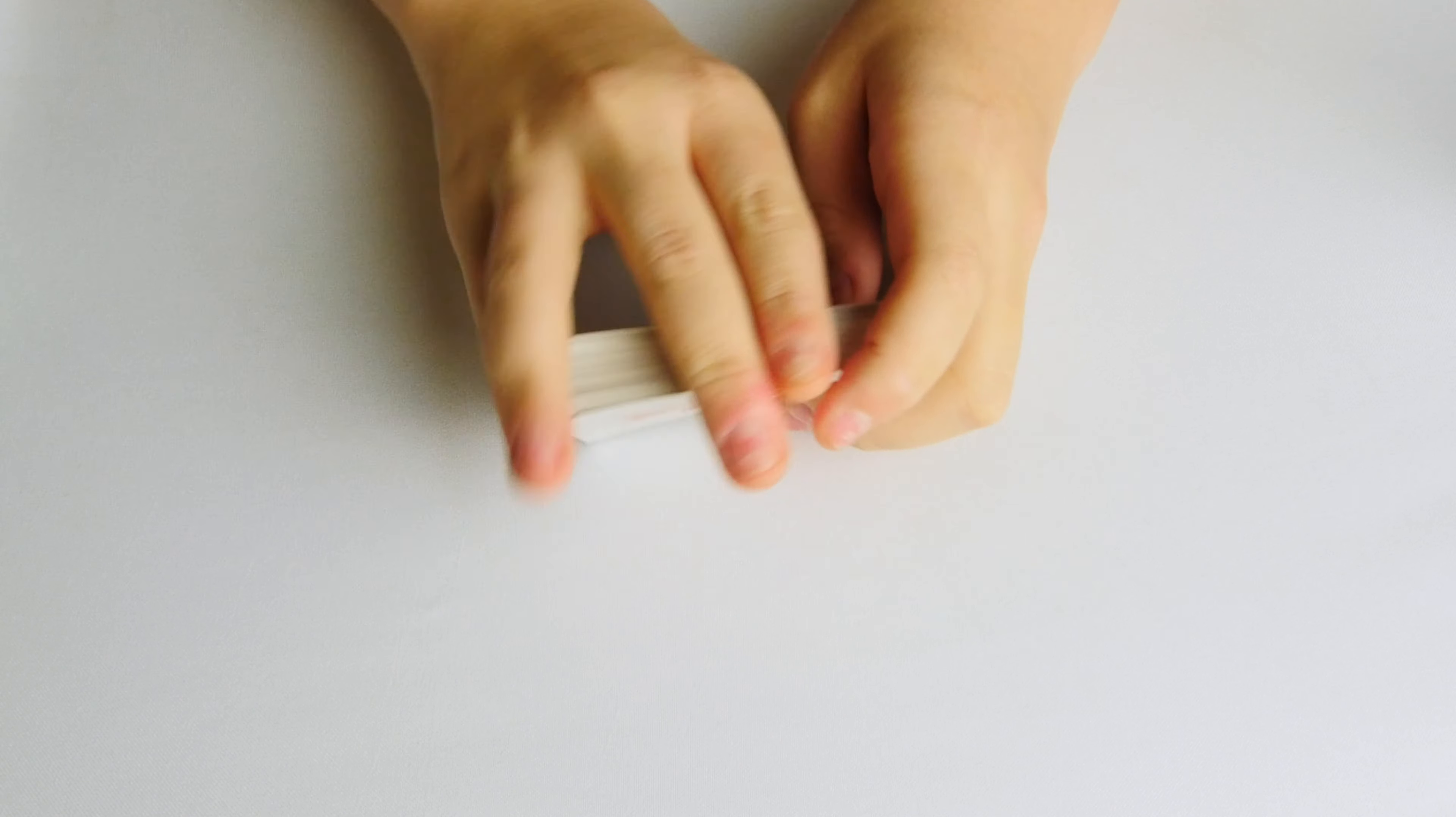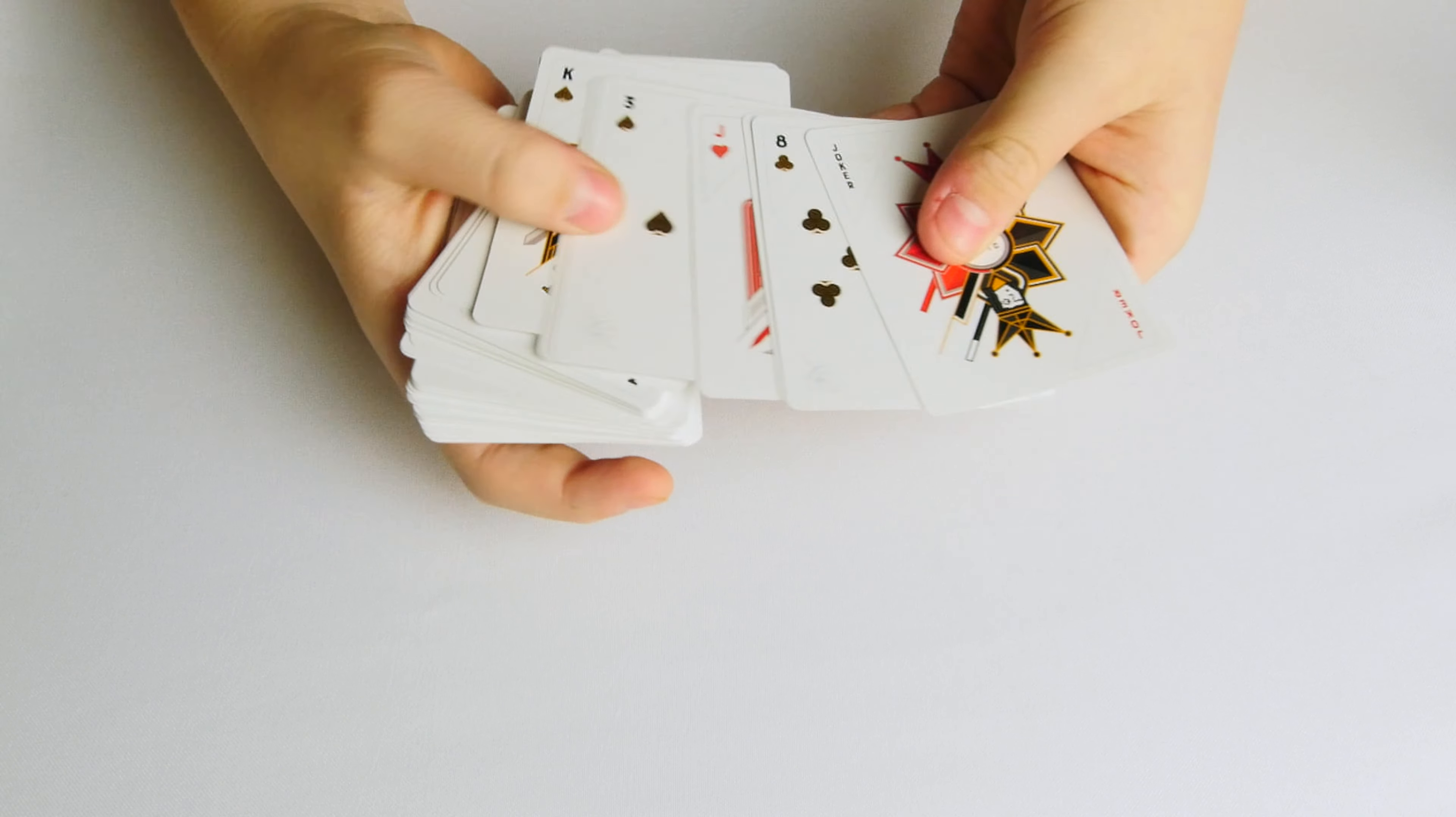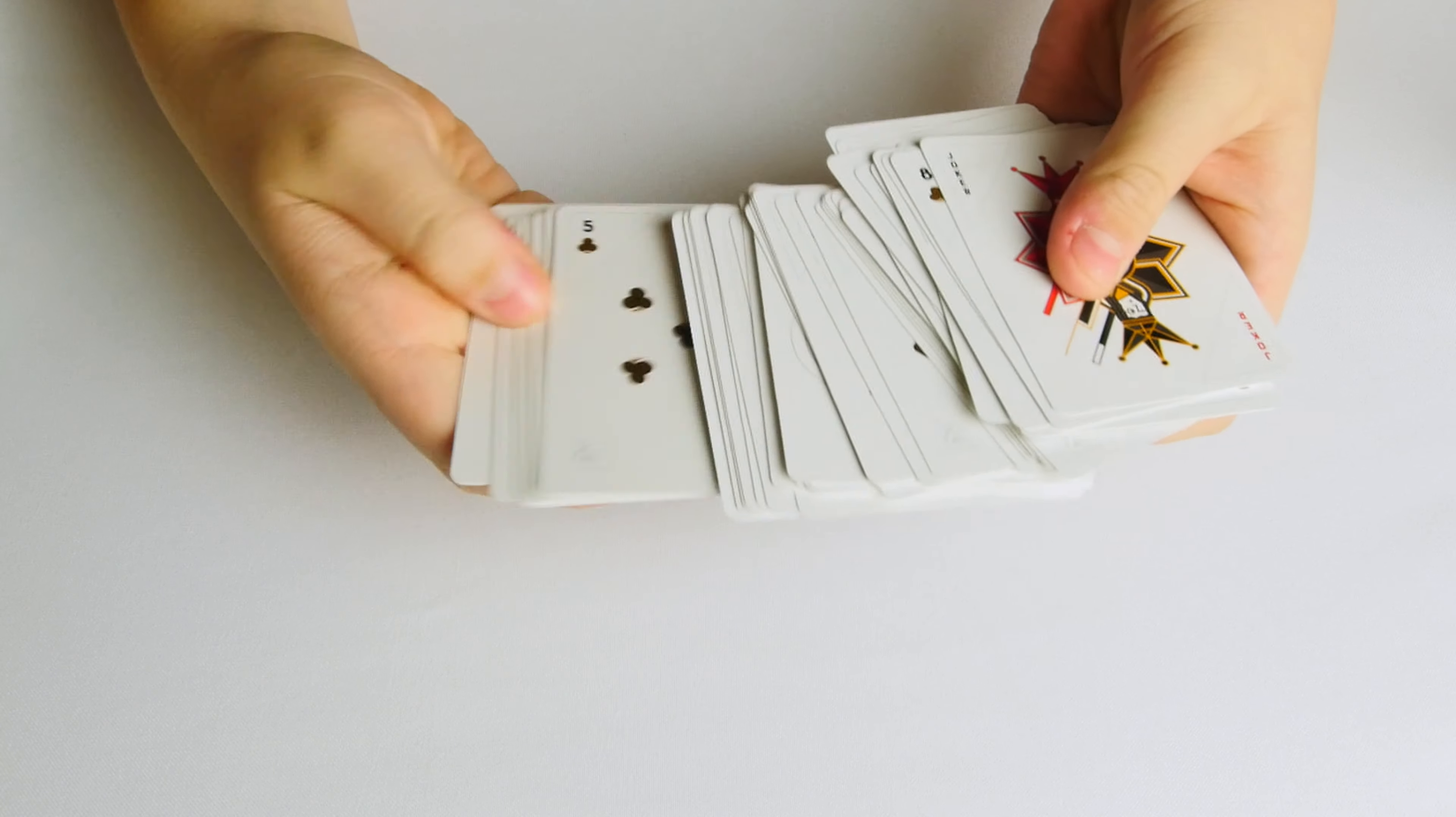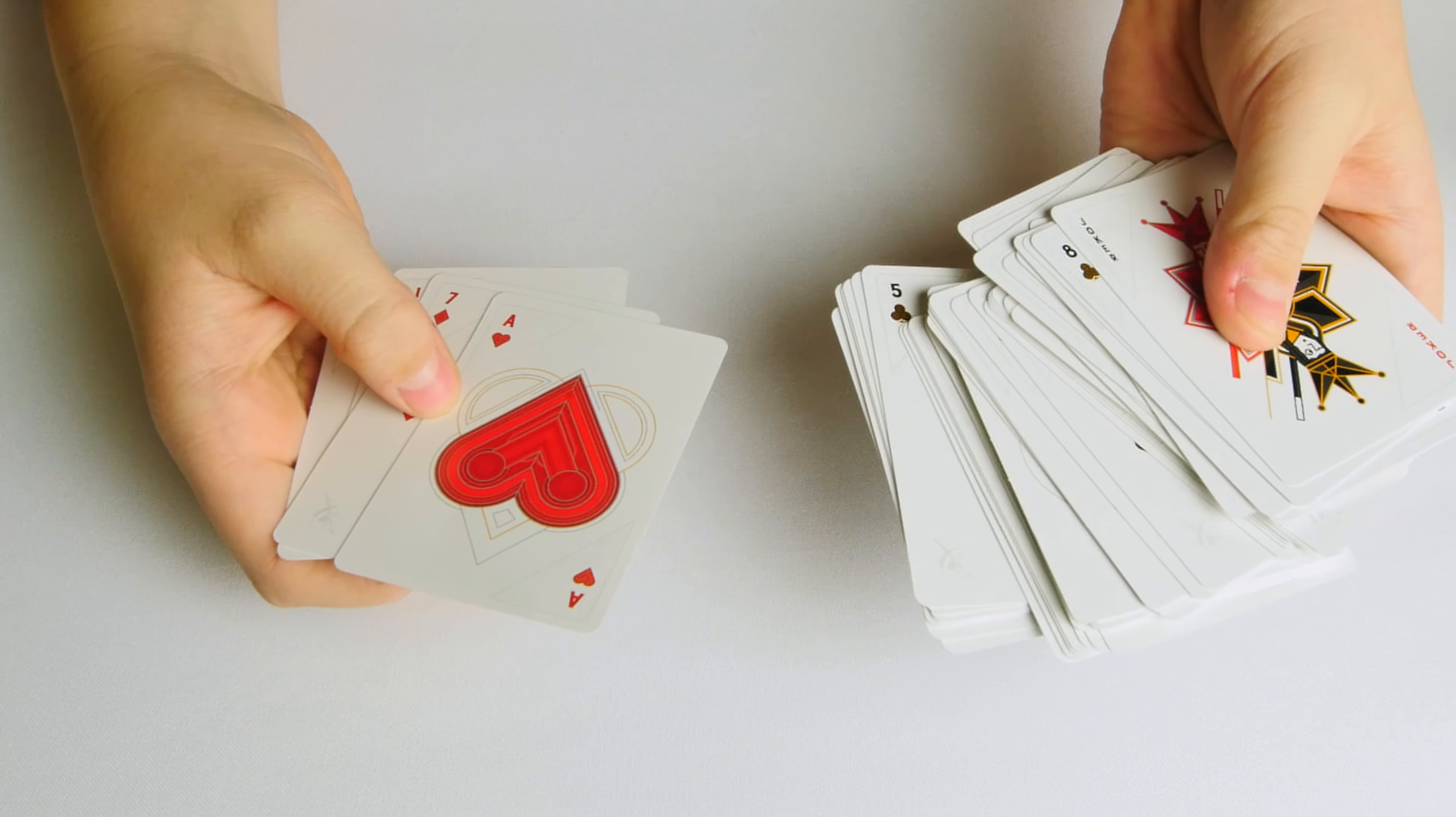But now here's where you have to pay attention. When you fan out the cards to show the audience that there's no setup and that they are totally random, you want to pay attention to the fourth card down in the pile, and that card is the Ace of Hearts.